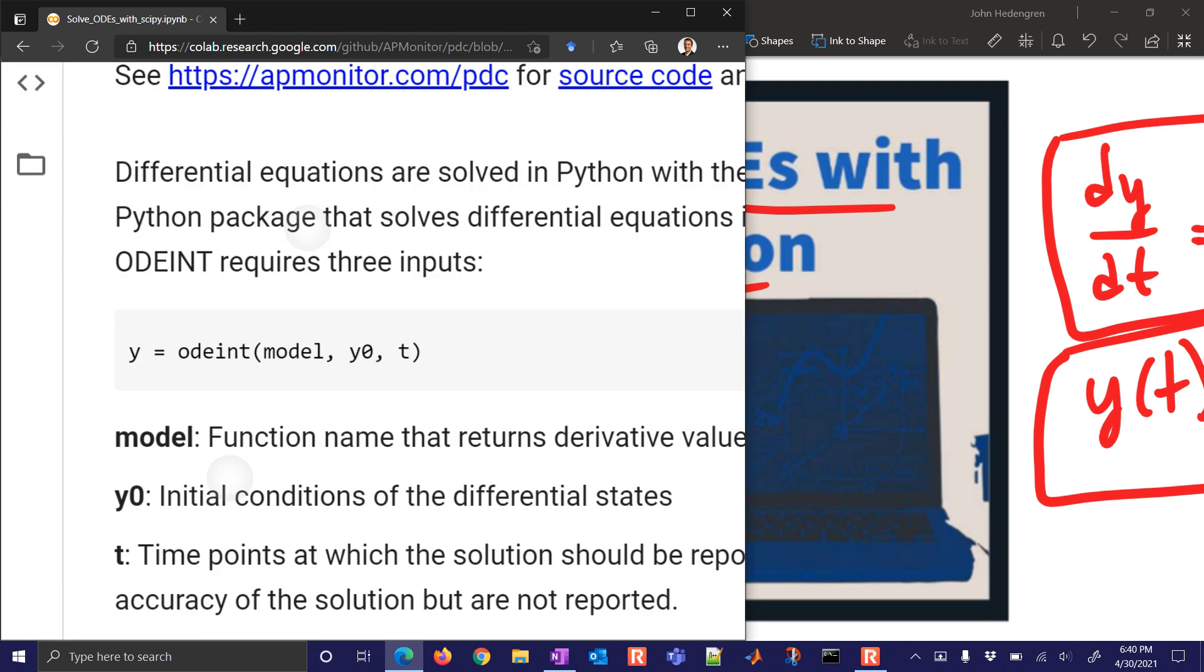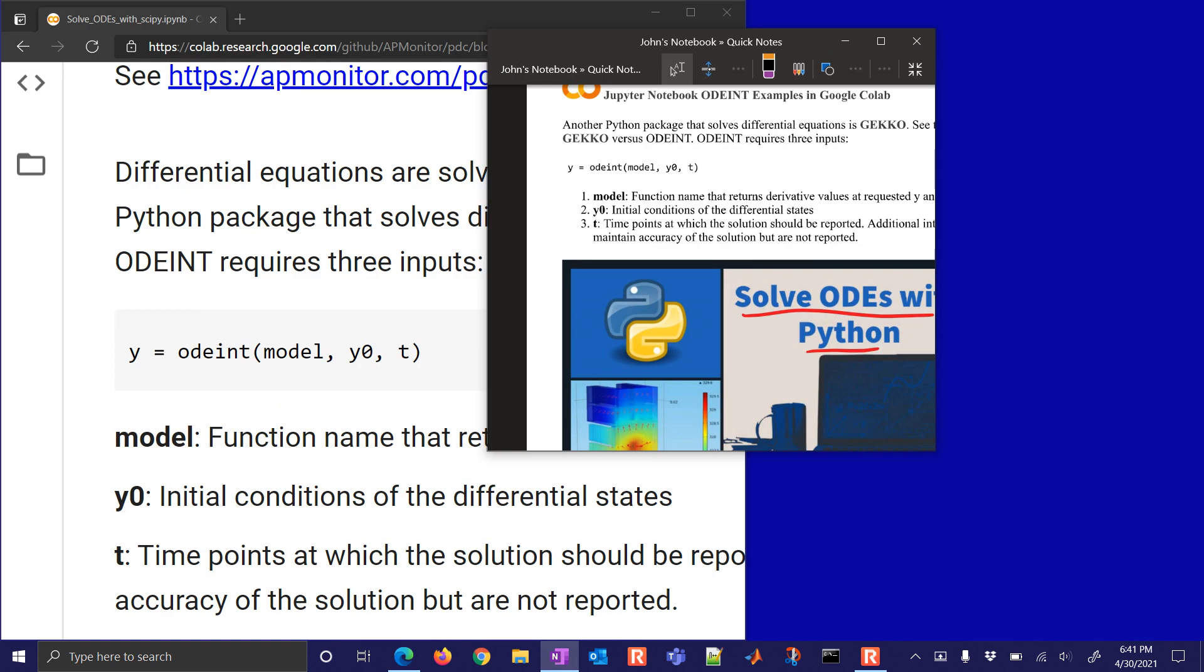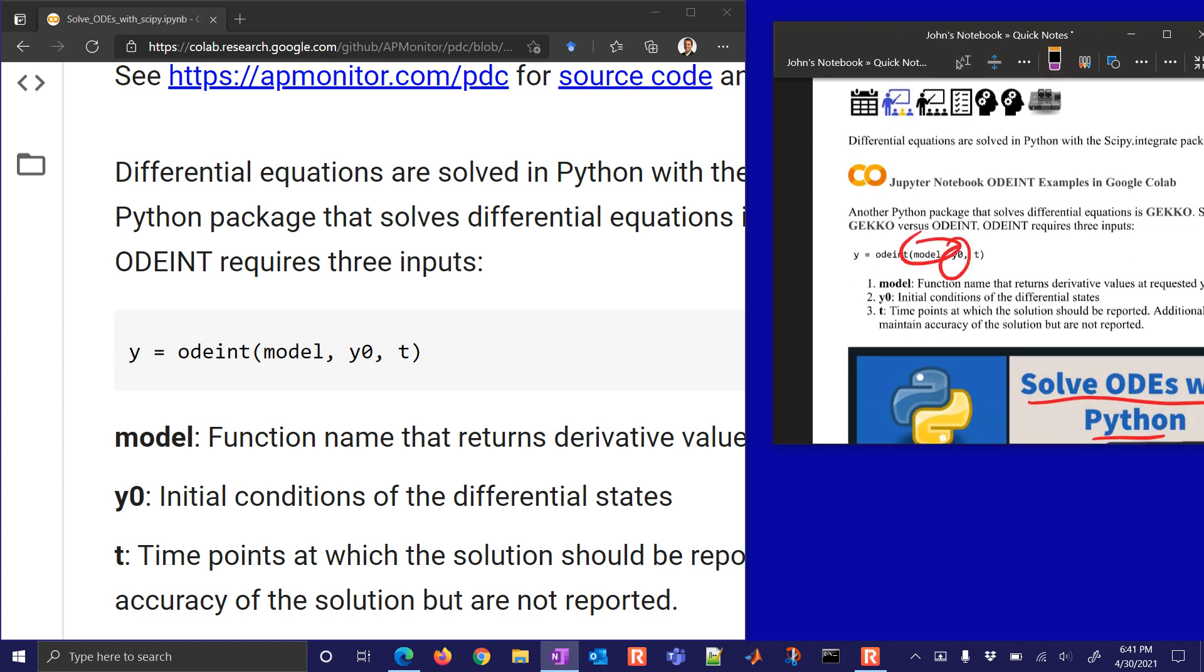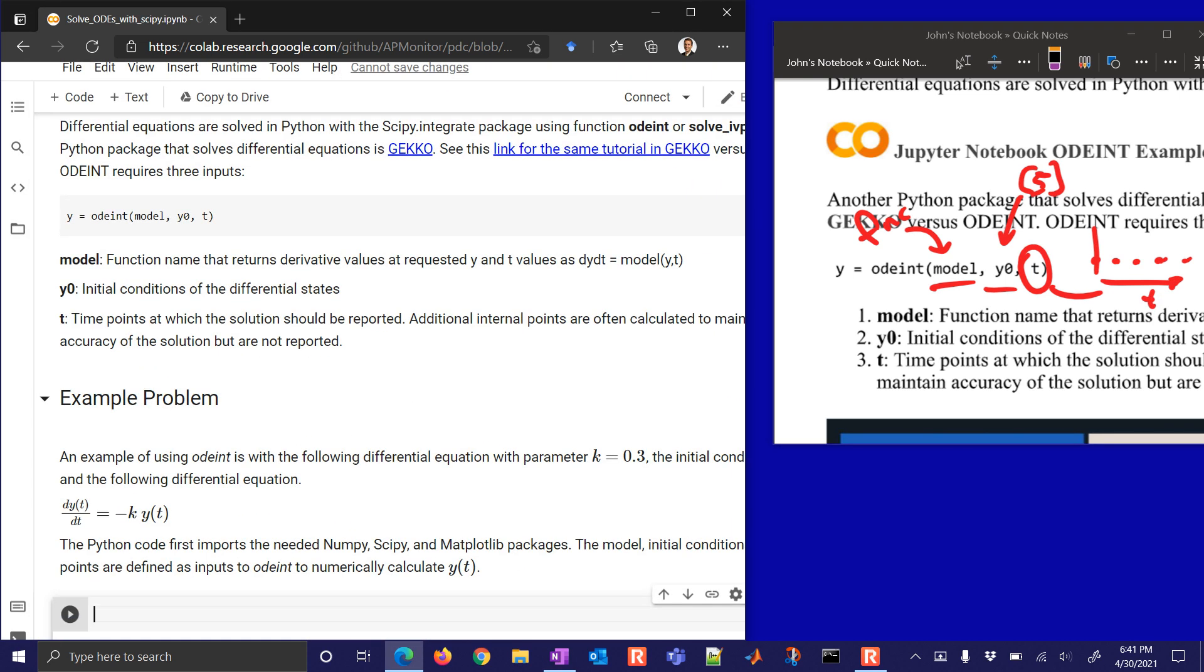So odeint is a function in the SciPy package that has three inputs. And let me go ahead and just write over here some of those inputs. We have model, initial condition y0, and then also t, which is our time. So we need these three inputs into our model. Now, this model is going to be a function. This is just going to be a value. So let's say we're starting at a value of five, and then these are all the time points where we want to see a solution. Let's go on with setting up an example problem. Let's just jump right into it.